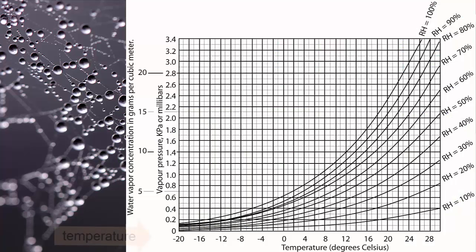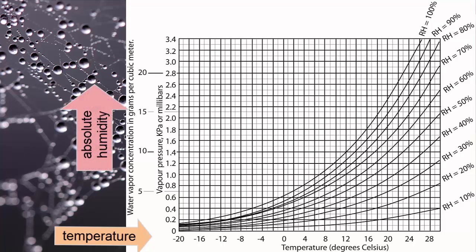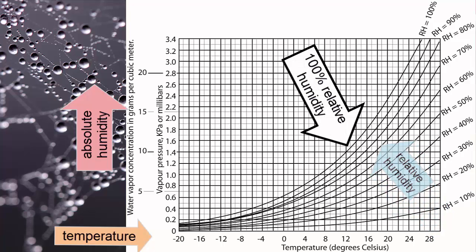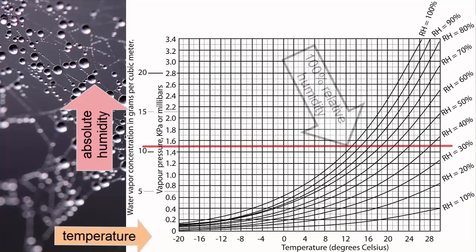In this graph, you can see temperature across the bottom x-axis increasing to the right. On the y-axis, we see absolute humidity measured in water pressure or concentration. The different curves represent different relative humidities, increasing as you move upwards. This white arrow points at the 100% relative humidity line. The red lines show that at 12 degrees Celsius, 100% relative humidity is reached when vapor concentration reaches 11 grams of water per cubic meter of air.